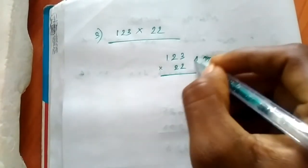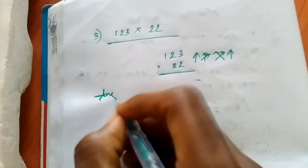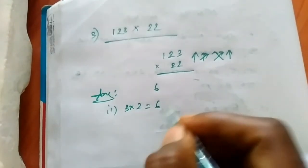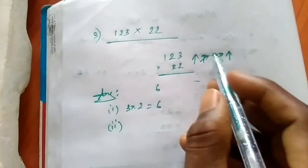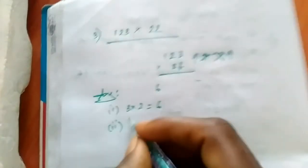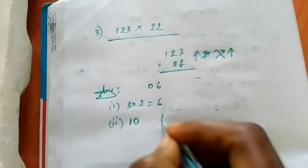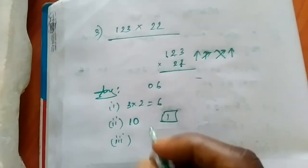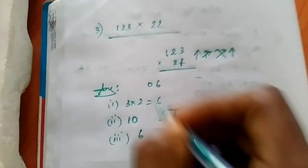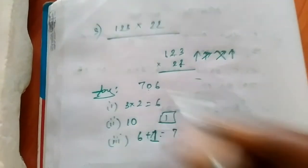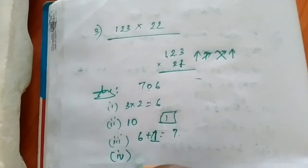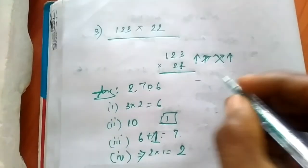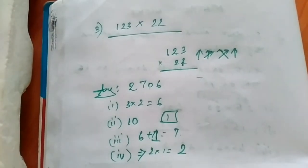Step one — first arrow cap: 3 into 2 equal to 6. The answer is 6. Second cross: 2 x 2 is 4, plus 3 x 2 is 6, equal to 10 — write 0, carry 1 in memory. Third: 2 x 1 is 2, plus 2 x 2 is 4, equal to 6, plus 1 (carry) equal to 7. Next: 2 x 1 is 2. The answer is 2706.